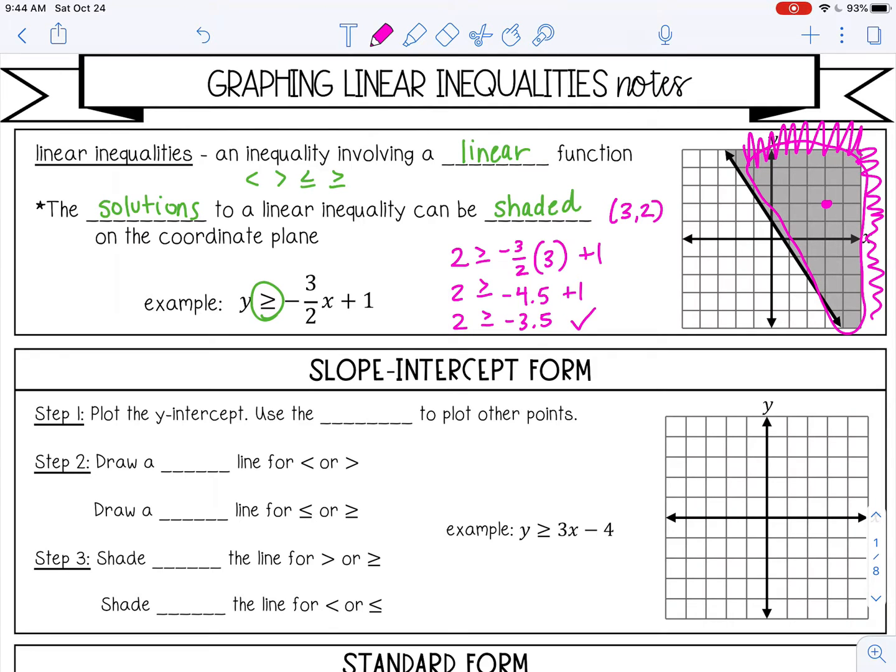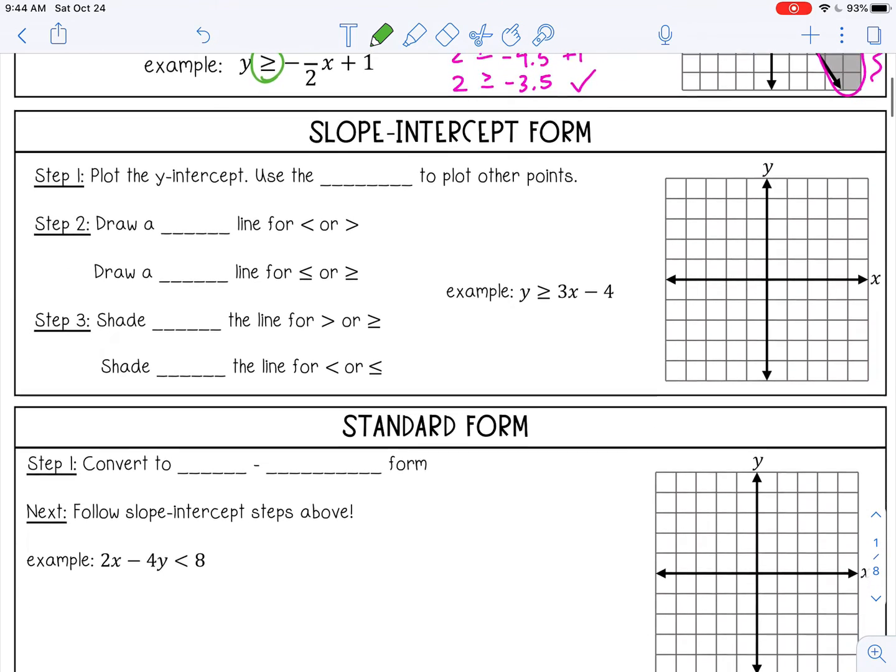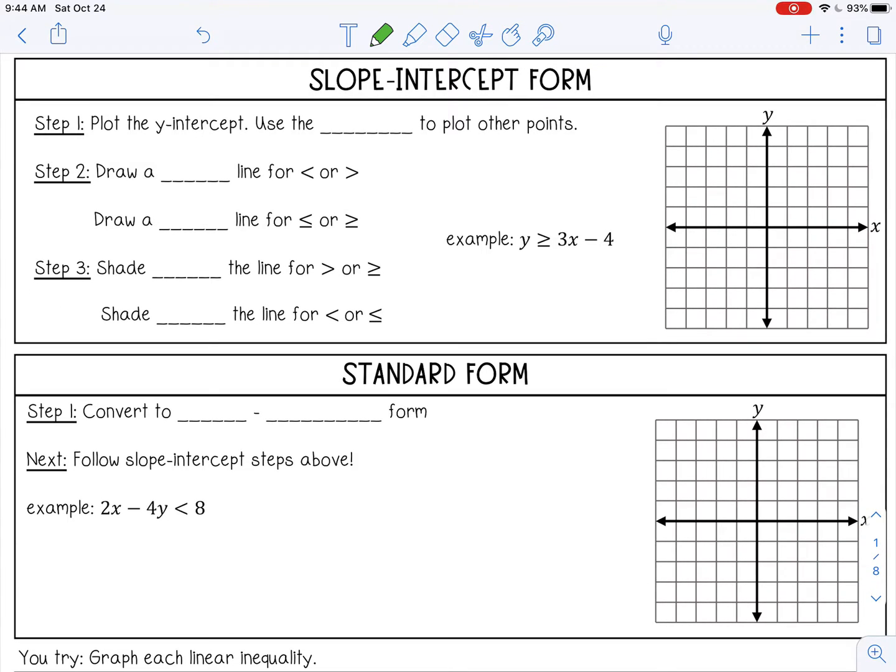Let's talk about inequalities in slope-intercept form. When an inequality is in slope-intercept form, we plot the y-intercept first, then use the slope to plot other points. For this example, y is greater than or equal to 3x minus 4, I'm going to plot the y-intercept at negative 4. My slope is 3, which is 3 over 1, so I'll rise 3 and run 1.